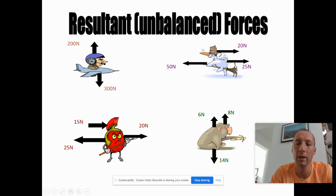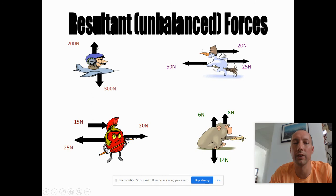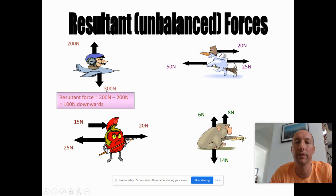I've got four examples on the screen of multiple forces acting on an object. The first one, this guy in an aeroplane, there are 300 Newtons pulling him down but 200 Newtons pushing him up. To find the resultant force, I have to think about the size of these forces and also the direction. Because these two forces are acting in opposite directions, I subtract the smallest from the biggest: 300 minus 200 leaves 100 Newtons downwards, because the biggest force is downwards.